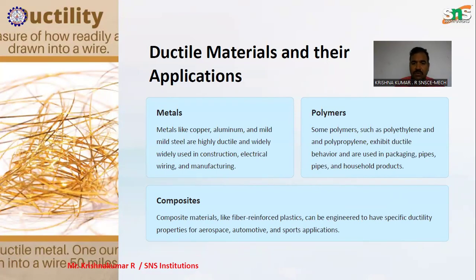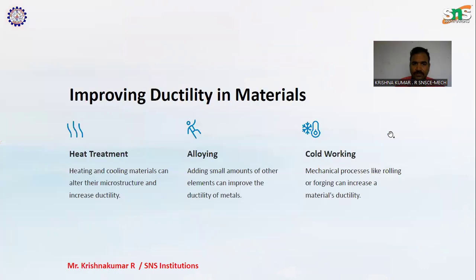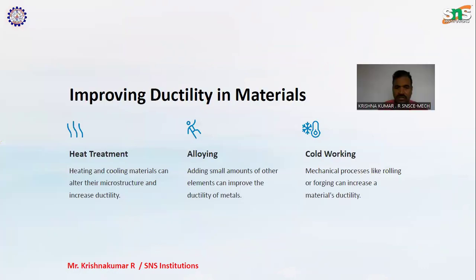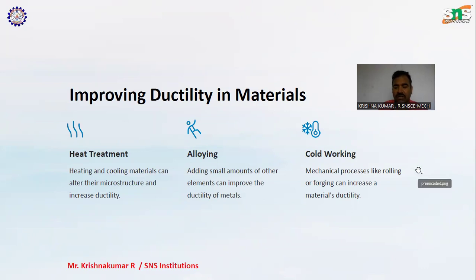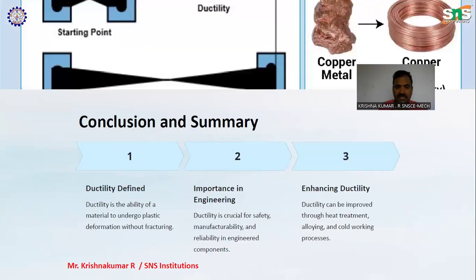Ductile materials and their applications include metals, polymers, and composites. Improving ductility in materials: heat treatment — heating and cooling materials can alter their microstructure and increase ductility. Alloying — adding small amounts of other elements can improve the ductility of metals. Cold working — mechanical processes like rolling or forging can also increase a material's ductility.